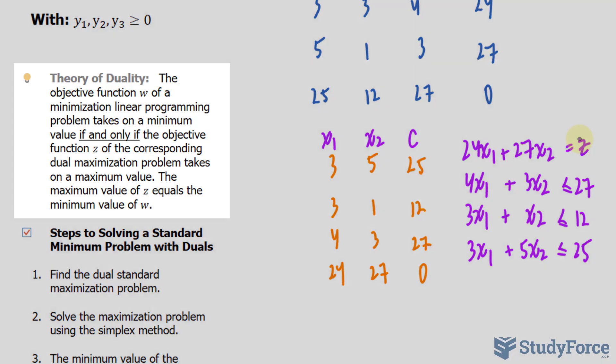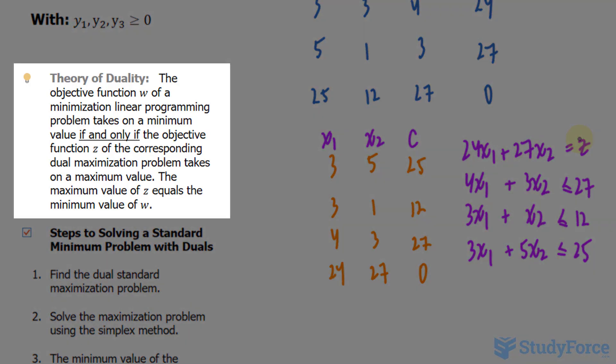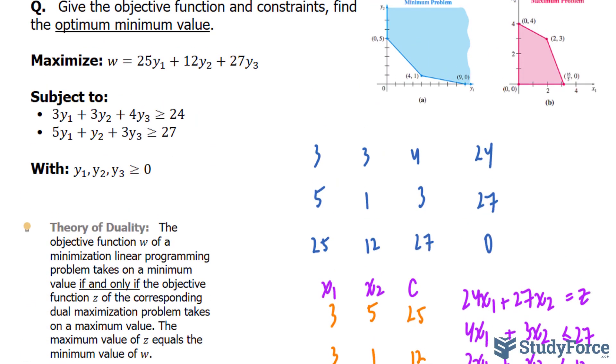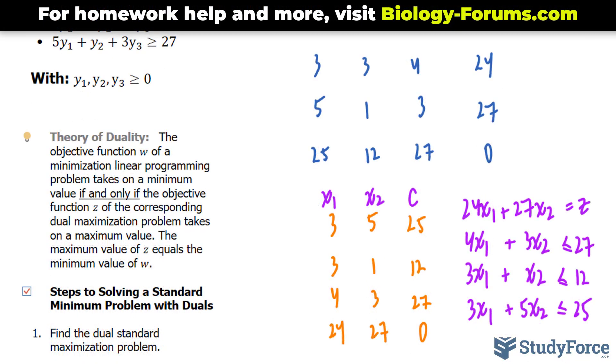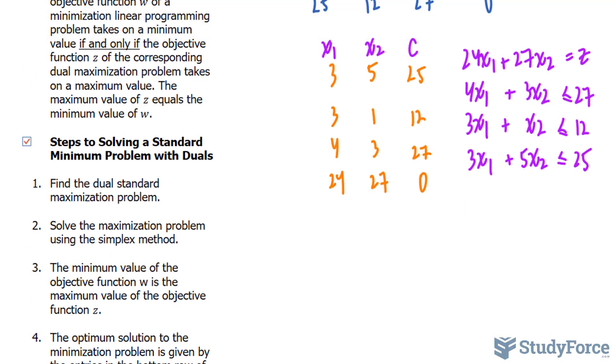Now, the reason why this works is because of the theory of duality, which states that the objective function w of a minimization linear programming problem takes on a minimum value if and only if the objective function z, which we wrote right here, takes on a maximum value. The maximum value of z equals the minimum value of w. So because we transpose this matrix, if I now perform the simplex method for this problem with the objective function and the inequalities as our constraints, that maximum will serve as my minimum.